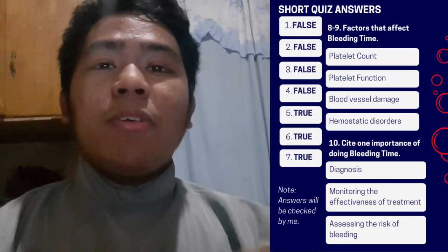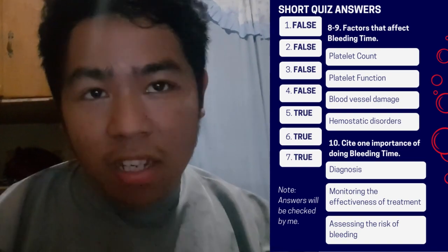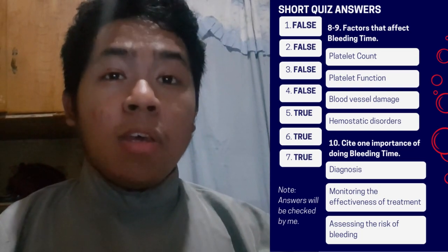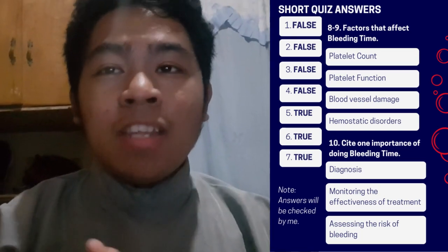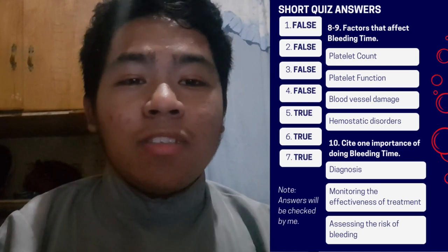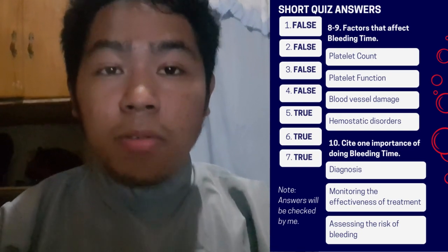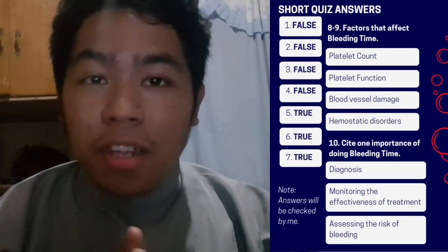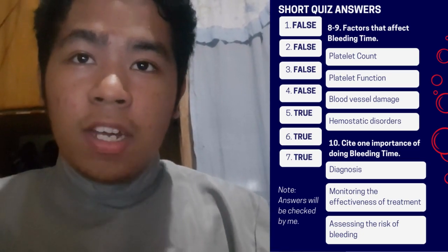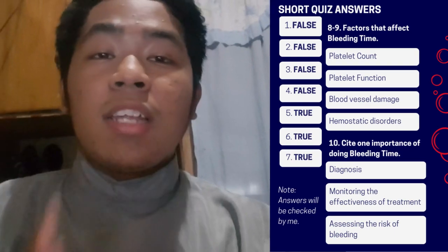For number five, yes, it is true — the bleeding is blotted every 30 seconds. Number six, the normal bleeding time is two to five minutes; anything lower or higher can indicate an abnormal condition or something wrong with the procedure. Number seven is also true — blood thinners can shorten bleeding time. For numbers eight to nine, the correct answers for factors that affect bleeding time are: platelet count, platelet function, blood vessel damage, and hemostatic disorders. Any similar answer will be considered in checking.